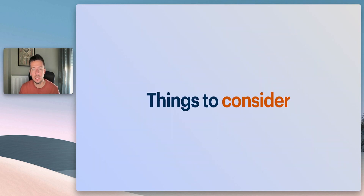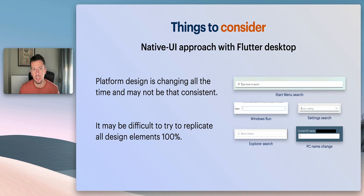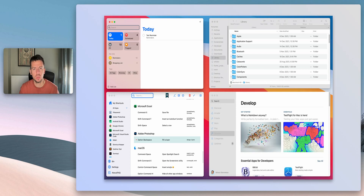Now let's consider some things to keep in mind if you follow this approach. Platform design — how things look in macOS or Windows — is changing all the time and may not always be consistent. Windows is probably more notorious for this; you can find five different text box designs on Windows alone. You should know that you may not be able to follow all native UI design 100%, but it won't matter that much. These UI libraries and this approach can get you really far toward a native UI by default. Users won't be that disappointed if your text box has slightly more rounded corners than the macOS one, as long as the core of your app's UI design looks and works great.